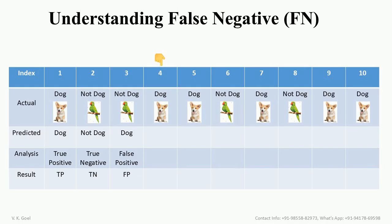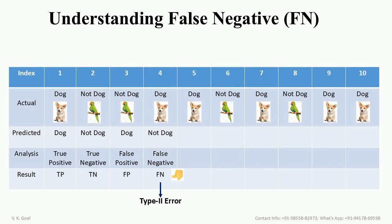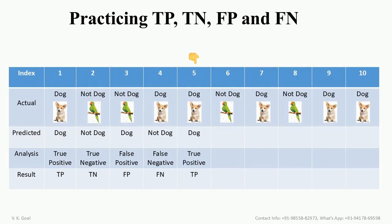Finally, now let's take the case of false negative. Consider case number 4 here. In actual, it is a dog image. Say it is predicted as 'not dog.' As the result is false and is negative, that is false negative. Therefore, it is called as false negative, that is FN. False negative error is also called type 2 error. Type 2 error is just like saying there is not a problem when there actually is.